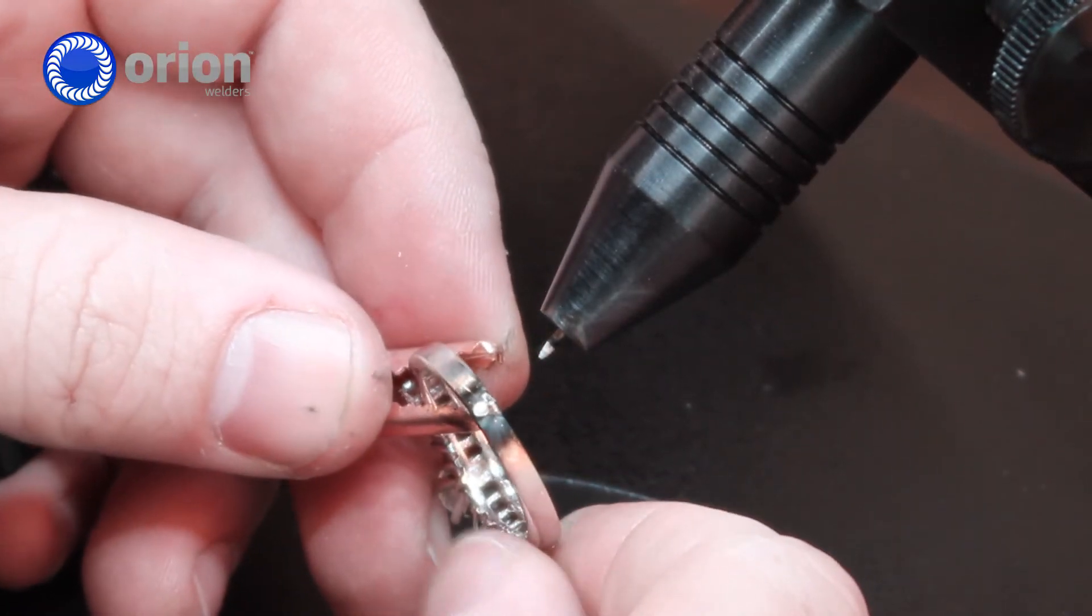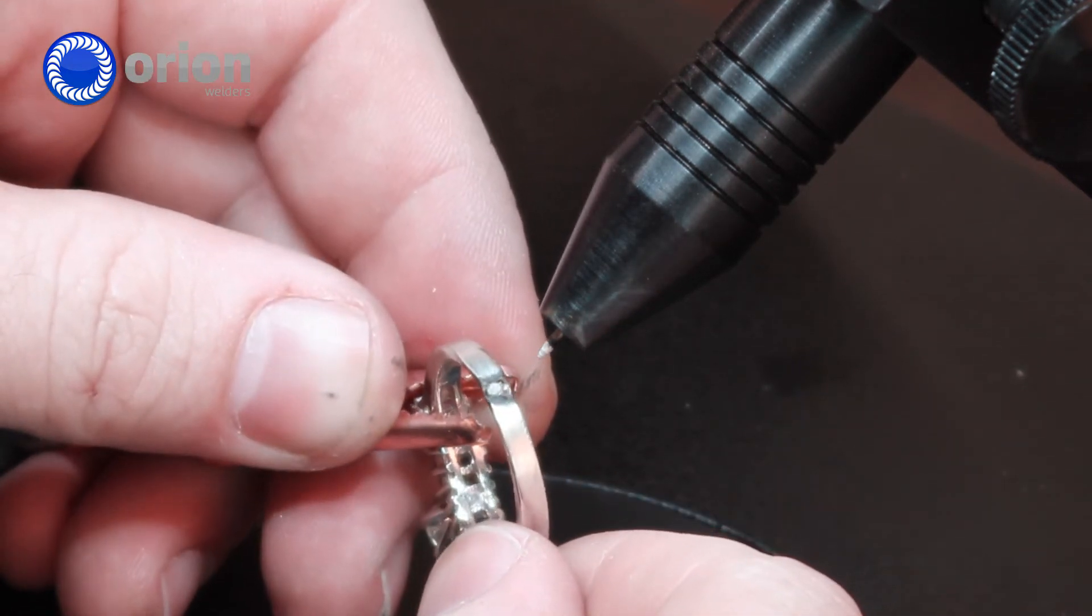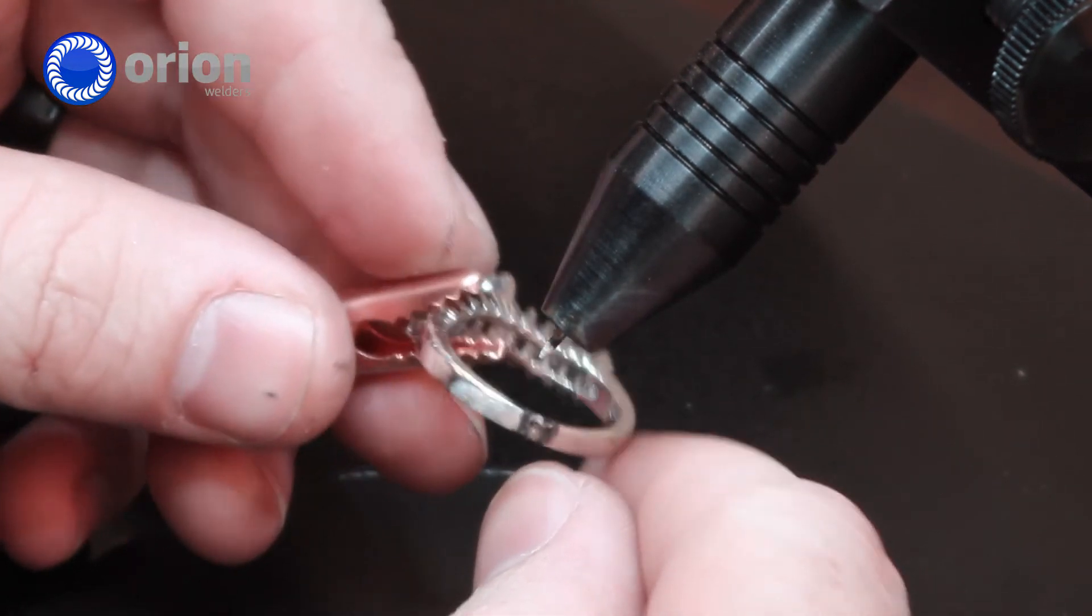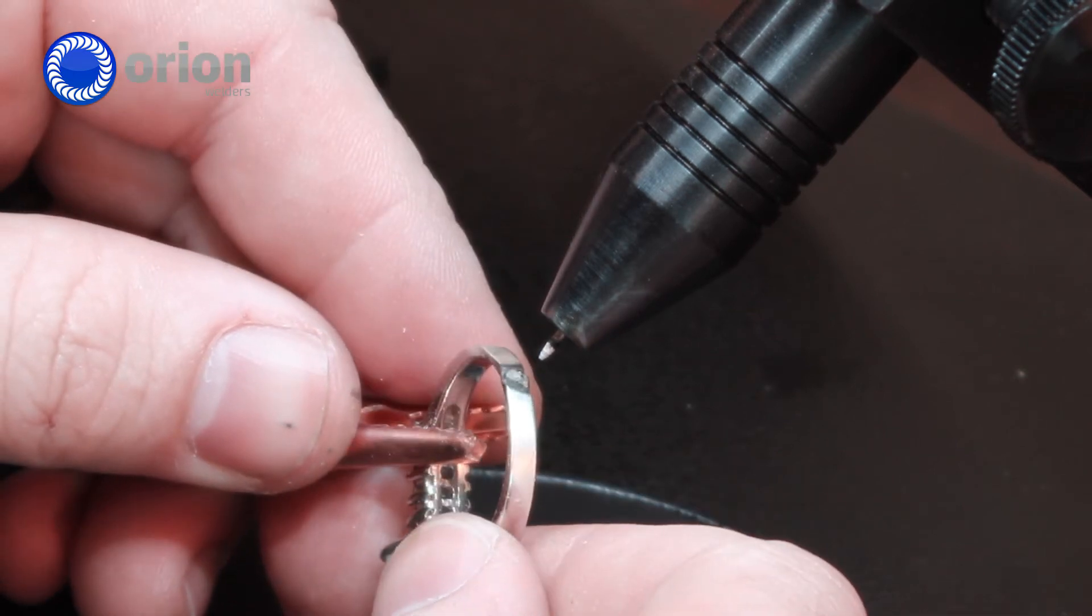So after adding my material, I've built the area up to where I can file it and polish it down and have my finished ring resize.